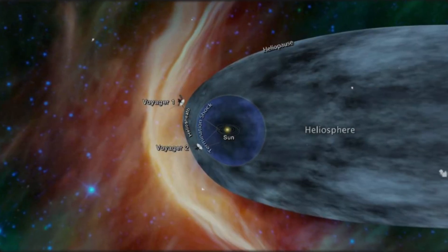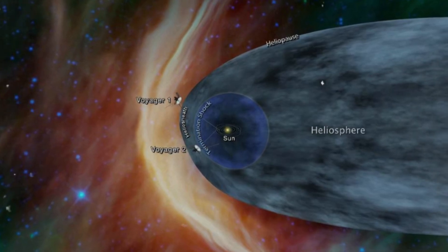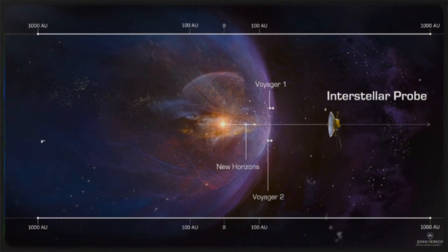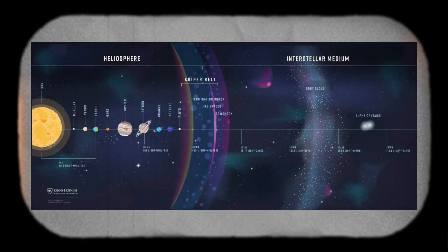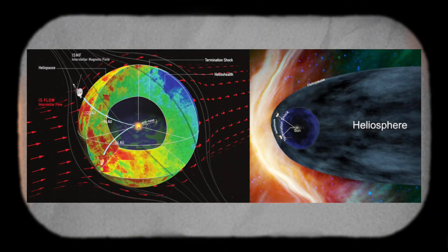As Voyager 2 neared the heliopause, researchers observed some intriguing changes. The plasma surrounding the probe increased in density while simultaneously slowing down and heating up. Beyond the heliopause, the interstellar medium was found to reach temperatures approaching 30,000 degrees Celsius, which was notably hotter than scientists had previously predicted. Interestingly, despite these high temperatures in the interstellar medium, the plasma surrounding the Voyager probes remained surprisingly cool due to its extremely diffuse and thin consistency.